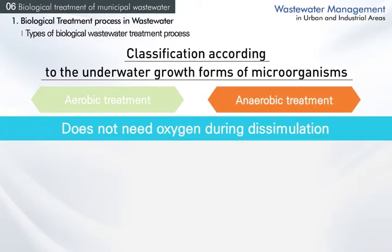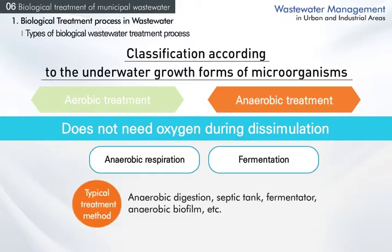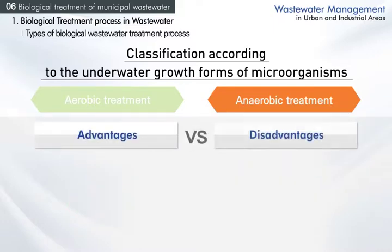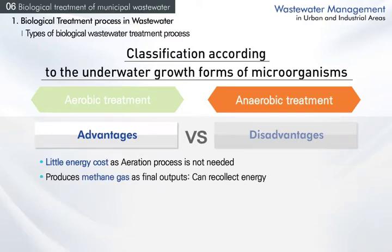Anaerobic treatment does not need oxygen for microorganisms to dissimulate and can be divided into anaerobic respiration and fermentation. Common treatment methods are anaerobic digestion, septic tank, fermentator, and anaerobic biofilm. Since anaerobic treatment does not need aeration for oxygen supply, its energy cost is cheaper than aerobic treatment, methane gas is produced as a final output enabling energy recollection, and it produces little wasted sludge.